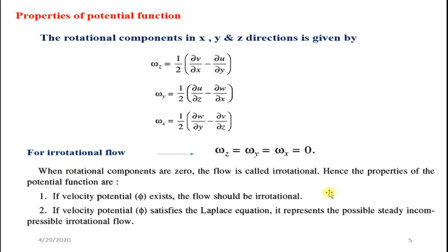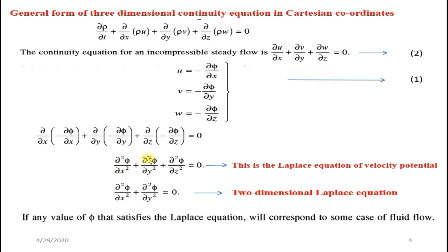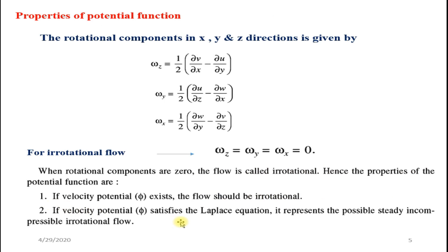Two properties of the velocity potential function: First, if the velocity potential phi exists, the flow is irrotational, and conversely if the flow is irrotational, phi exists. Second, if the velocity potential phi satisfies the Laplace equation — ∂²φ/∂x² + ∂²φ/∂y² + ∂²φ/∂z² = 0 — it represents a possible steady, incompressible, irrotational flow. This is a very important statement.